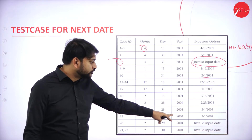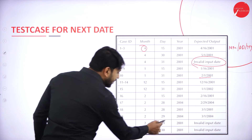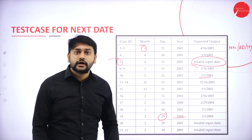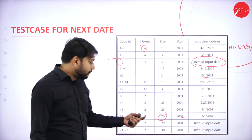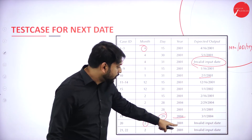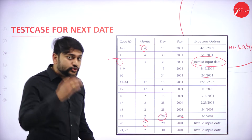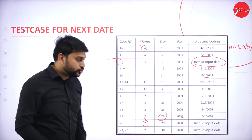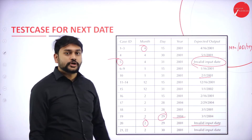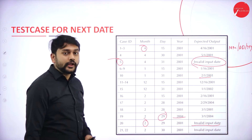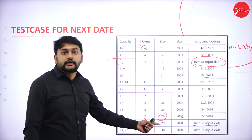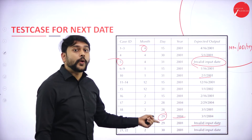For February 29, 2004: since it's a leap year, you can have day = 29, and the next date is calculated with no issues. However, for February 29, 2001: this is an invalid input date. Since 2001 is a normal year, February 29 does not exist, so the next date cannot be calculated.